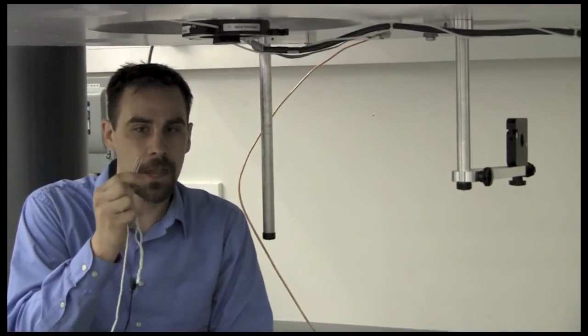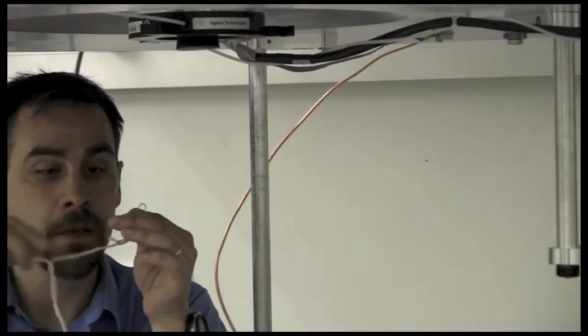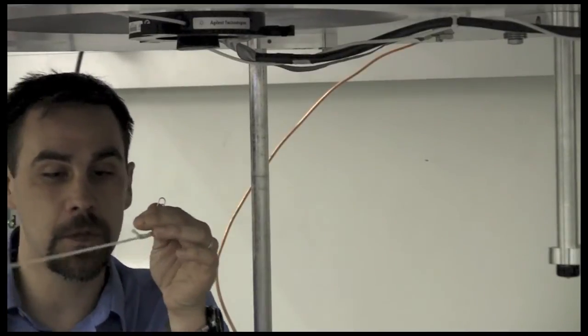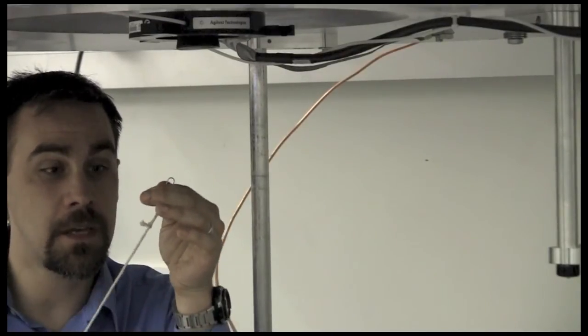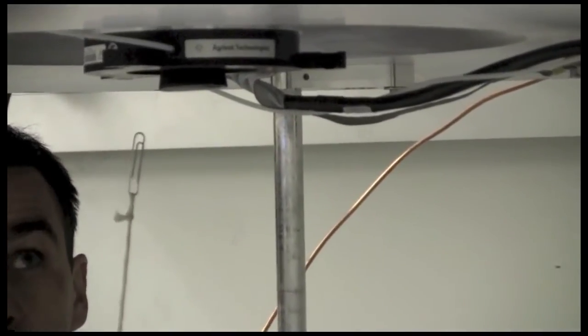So I have here a standard paper clip, and because I'm in a strong magnetic field, it wants to get pulled into the bore of the magnet up there. So I've attached the paper clip to a string, and you can see that the paper clip is very powerfully attracted into the bore of the magnet.